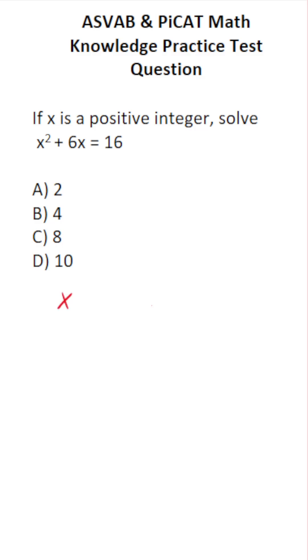So I'm going to copy this one down as is. We're trying to solve for x. We have x squared plus 6x equaling 16.